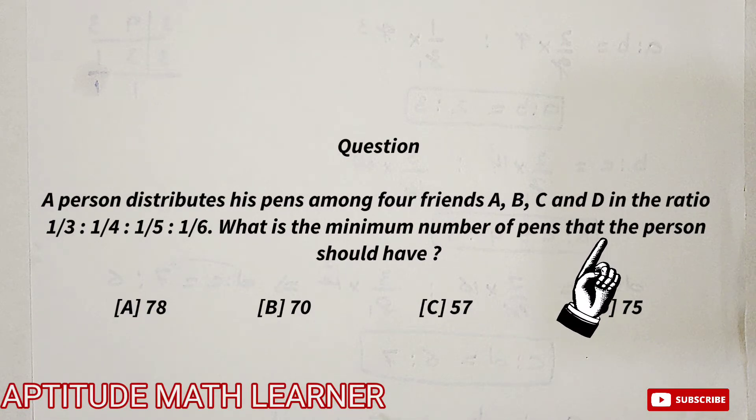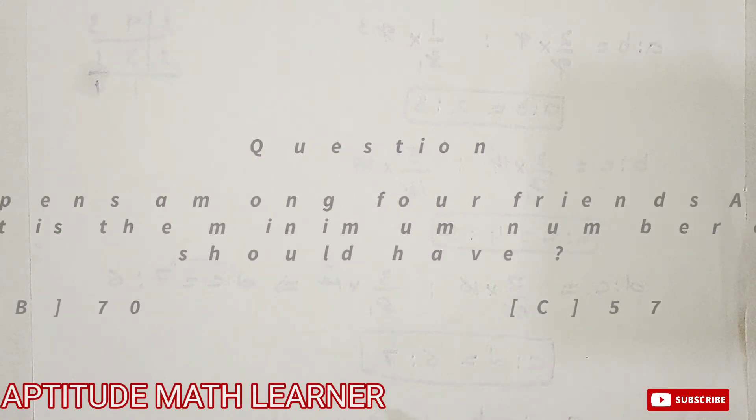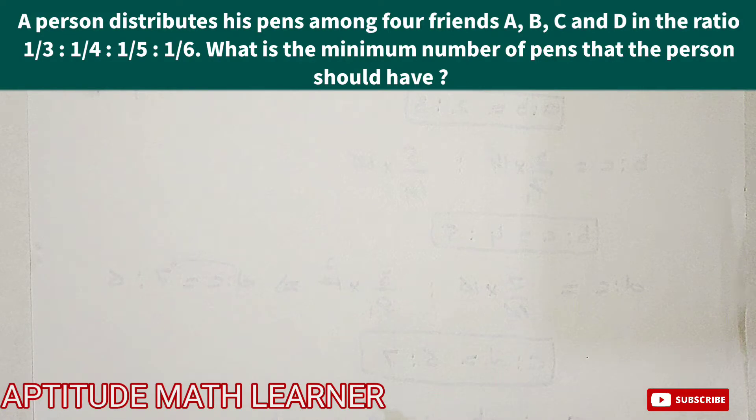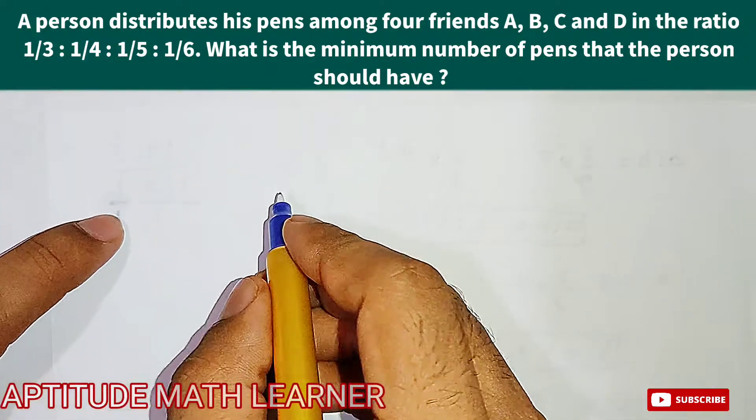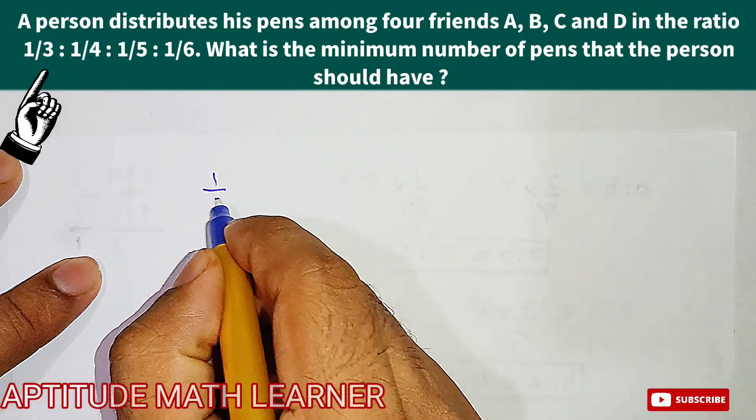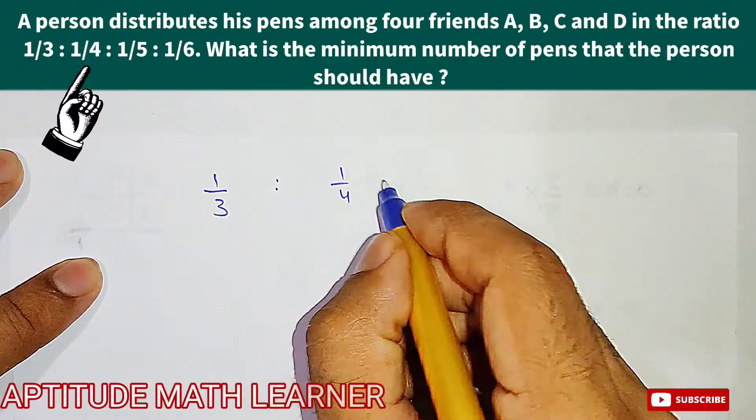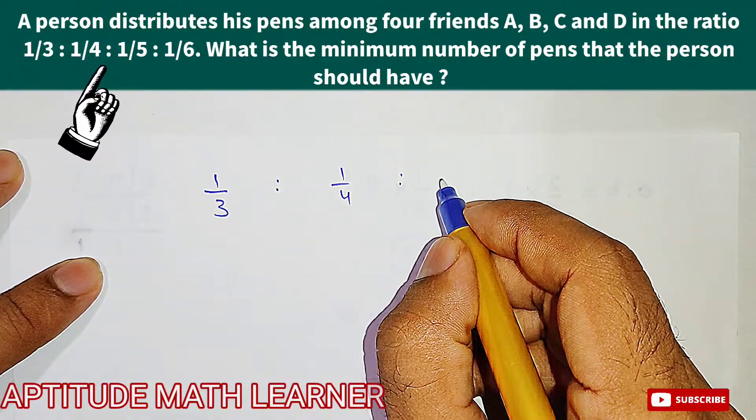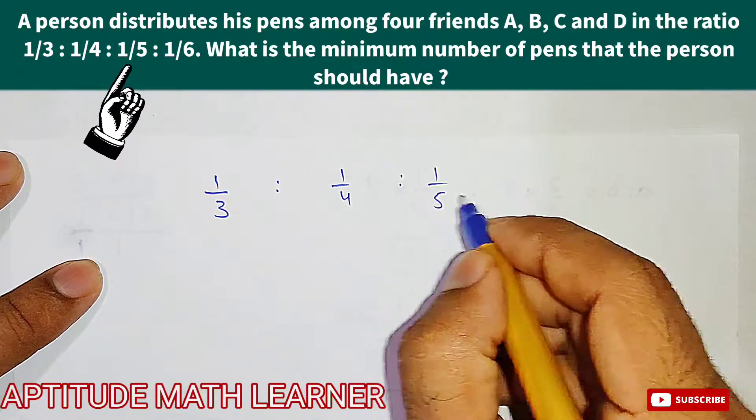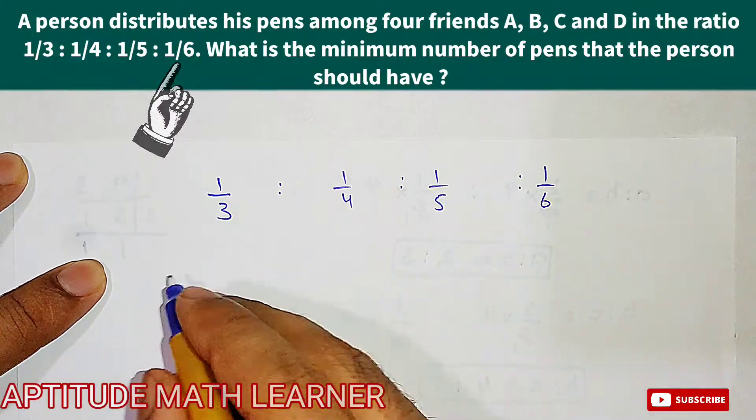So here we have to find out the minimum number of pens that the person has. The ratios we are having are 1/3, 1/4, 1/5, and 1/6. These are the ratios for distribution.